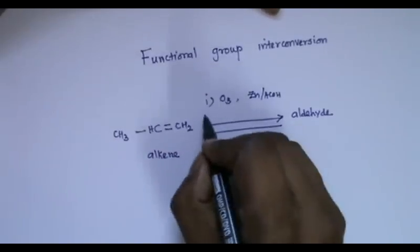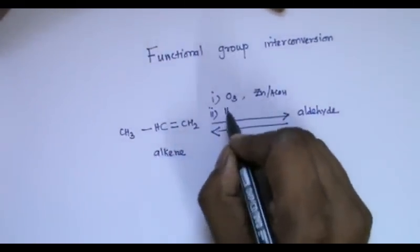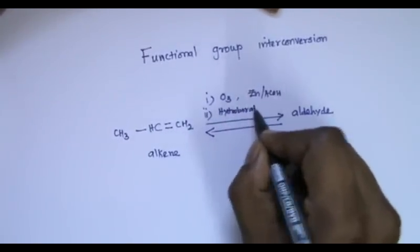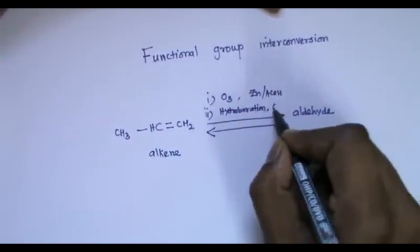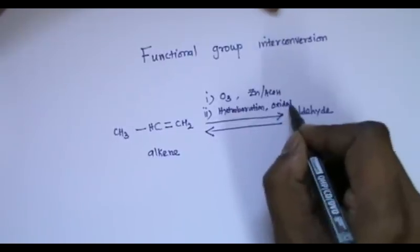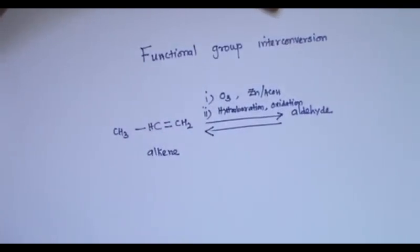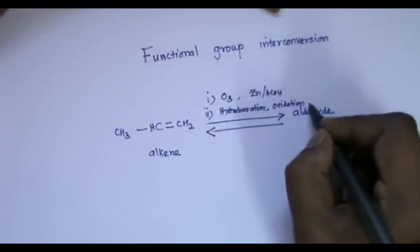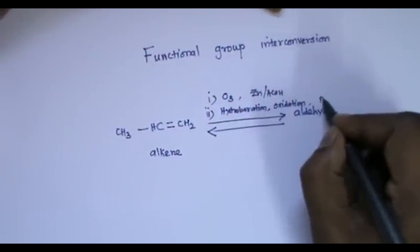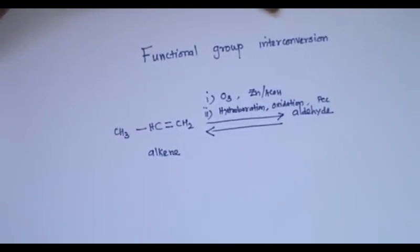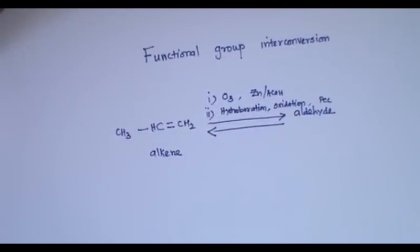There is another method, that is hydroboration followed by oxidation. We will get propanol. We will get alcohol here. That has to be further oxidized by using PCC or PDC. So it involves two steps. It doesn't matter how many methods you can propose for the conversion of one functional group into another one.